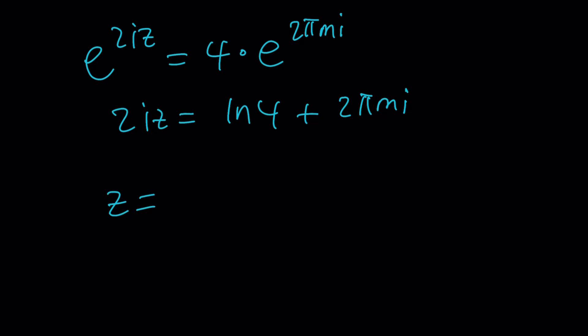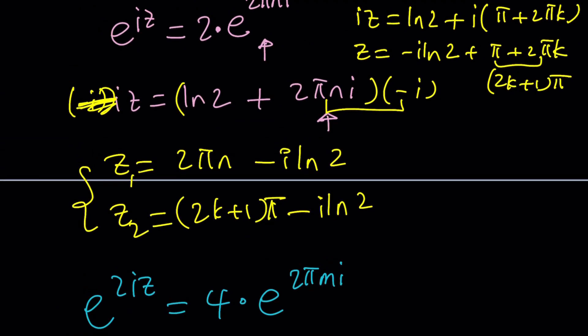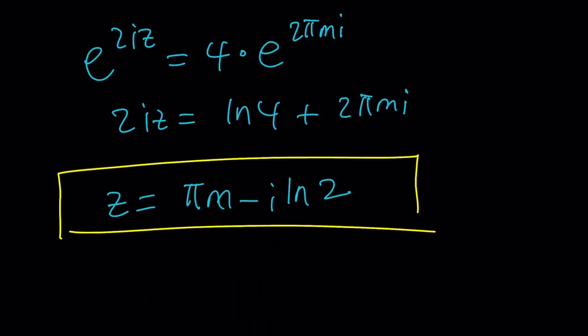Pi n minus, oops, supposed to be m. Pi m minus i ln 2. Guess what? This just represents multiples of pi. Here, they're split into odd and even. And, this brings us to the end of this video.